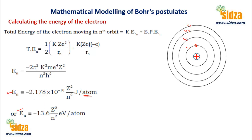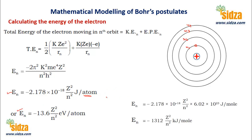This energy is associated with one atom. For one mole, multiply by Avogadro's number. When you take the joules-per-atom value and multiply by Avogadro's number, you get joules per mole. Further simplifying gives negative 1312 × Z²/n² kilojoules per mole.